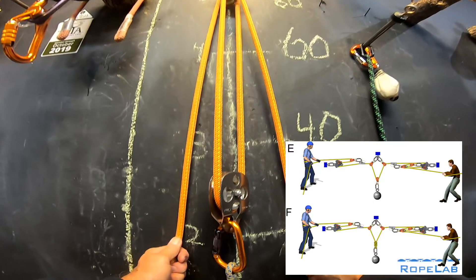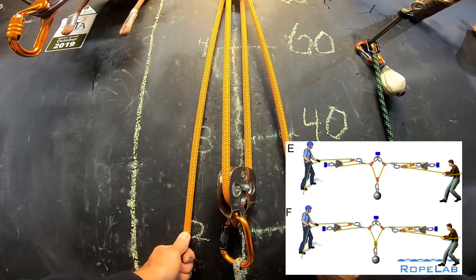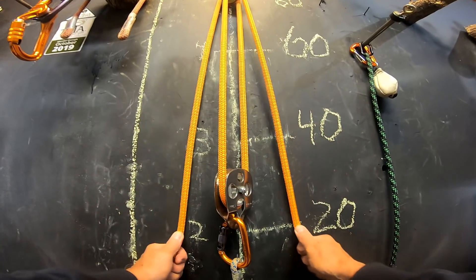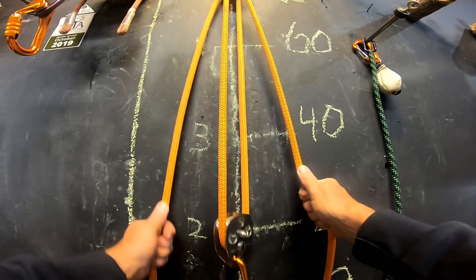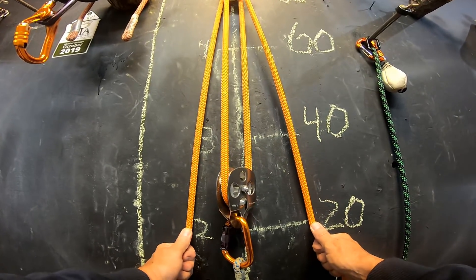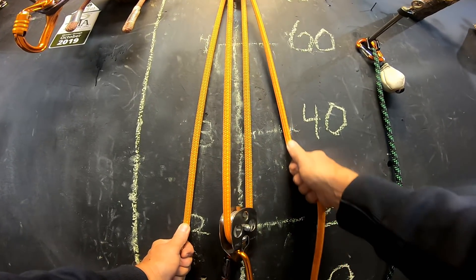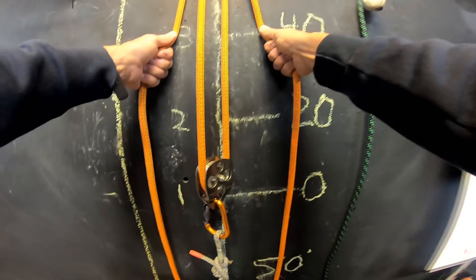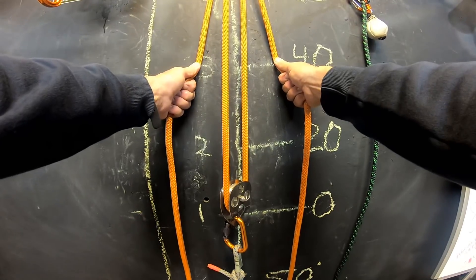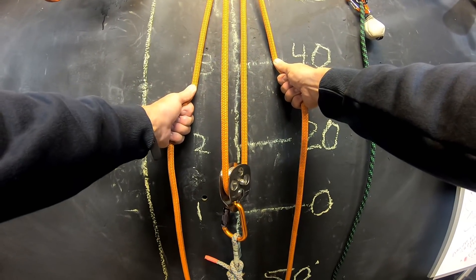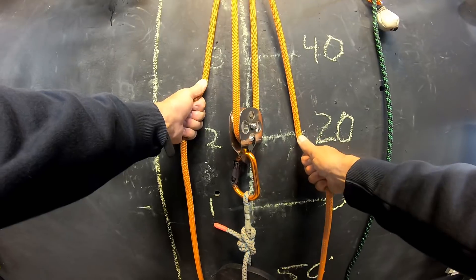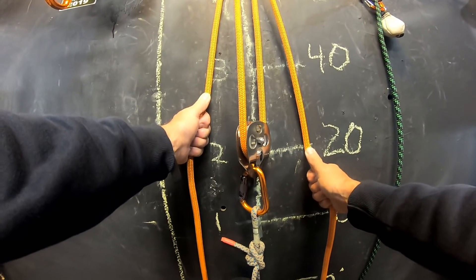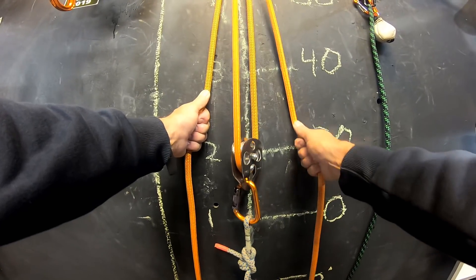What kind of intrigued me is what happens when both of these guys are pulling, but maybe this guy, my left guy, isn't working as hard as the right guy, right? So let's say they're both right here, and they're pulling, but this guy's only pulling a third, and this guy's pulling two-thirds. Does that change the mechanical advantage? And no, it doesn't.